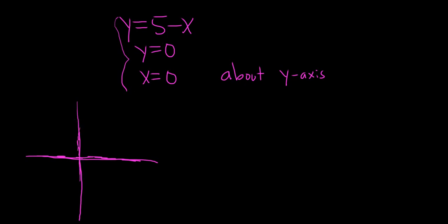And 5 minus x, if you plug in 0, it puts you here at 5. And if you plug in 5, you get 5 minus 5, so it puts you here at 0. So it looks something like this.